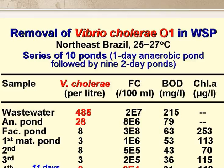We were also able to study the removal of Vibrio cholerae, the causative agent of cholera, soon after the current cholera pandemic showed up in northeast Brazil in the 1980s. The pond system was a little odd: a one-day anaerobic pond followed by several two-day ponds. The number of Vibrio cholerae was just under 500 per litre in the raw wastewater, and most were removed in the anaerobic pond, with a little further removal in each of the next five ponds, becoming undetectable in the effluent of the fourth two-day pond after a total retention time of 11 days.